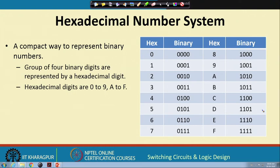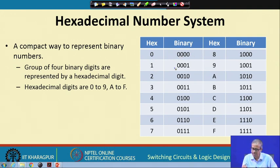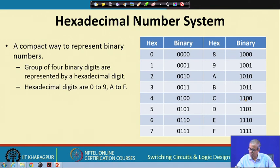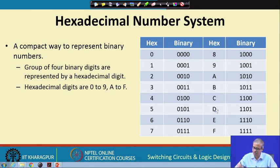This table shows the different hexadecimal digits 0 through F and their corresponding 4-bit binary equivalents. For example, binary 0110 = 6 in decimal, so it maps to hex digit 6. Binary 1100 = 8 + 4 = 12, and 12 is represented as C (since A=10, B=11, C=12). Binary 1111 = 8+4+2+1 = 15, which is F. So every 4-bit combination is equivalent to exactly one hexadecimal digit.